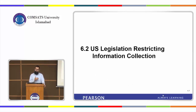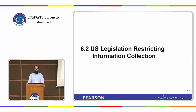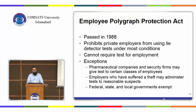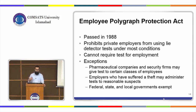Now we discuss US legislation regarding information collection. The first act is the Employee Polygraph Protection Act, passed in 1988. A polygraph is a lie-detection test. In the US, private organizations that are hiring people are prohibited from conducting this kind of test.